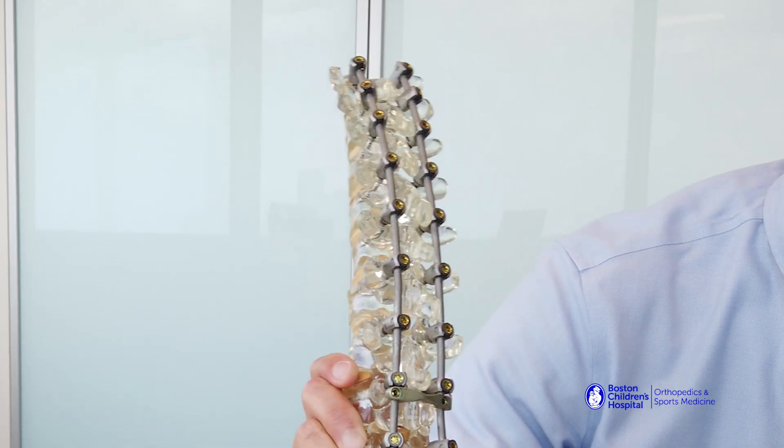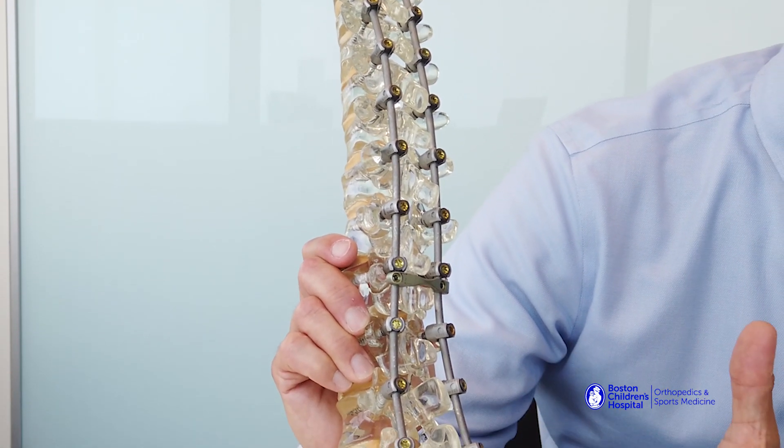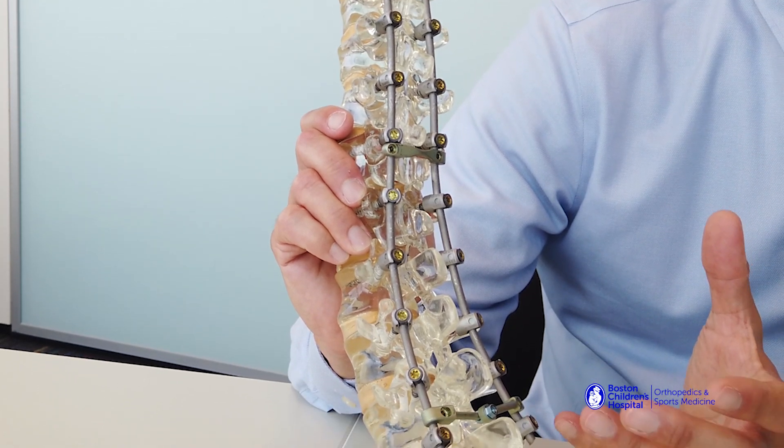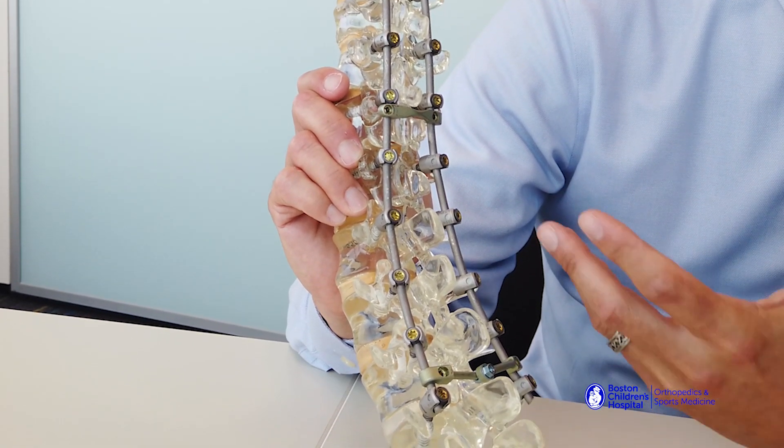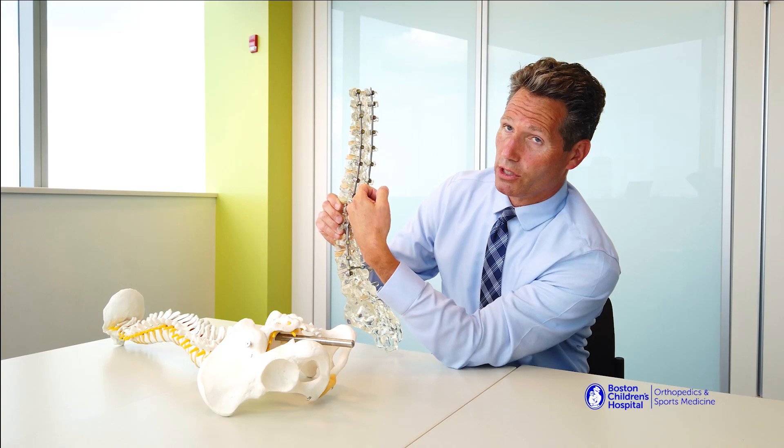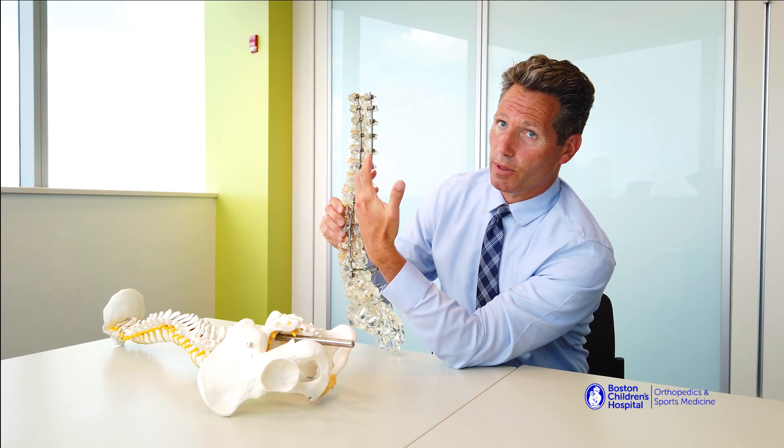So in this model you can see there's two rods which is pretty standard. Most posterior spinal fusions you put on multiple screws throughout the region of the spine that you're correcting, and then you use this straight rod and correct by capturing each of these screws over to the rod which then brings the spine over to the rod. So if you have a spine affixed to a straight rod it should be pretty straight.